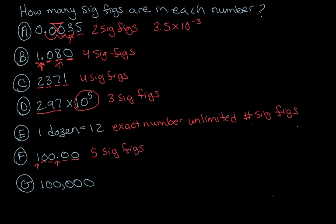For G, these zeros come to the right of a non-zero number, but there is no decimal point. So these are ambiguous.